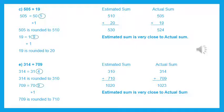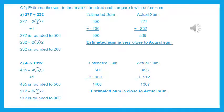Now let's move to question 2: estimate the sum to the nearest 100 and compare it with the actual sum. In question 1 we found the estimate to the nearest tens. In question 2 we have to find the estimate to the nearest 100. For nearest 100 we need to check the tens place. The first part A is 277 plus 232. The process is the same; the only difference is we estimate to the nearest 100.